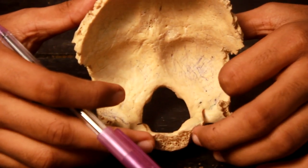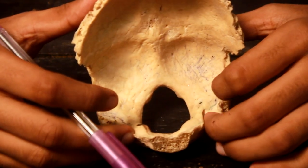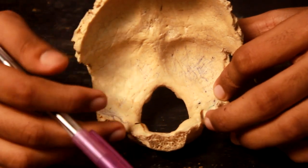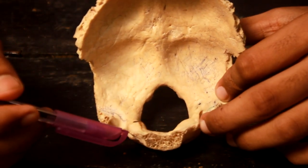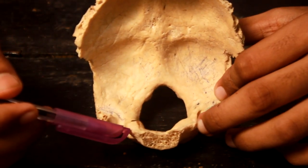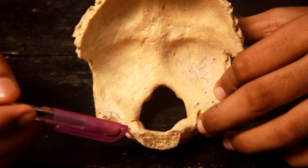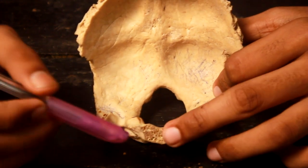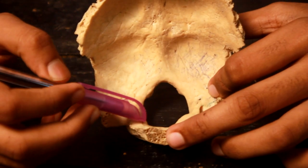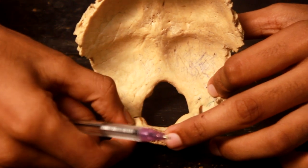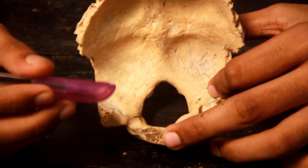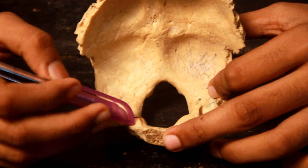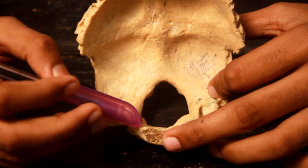Each of the lateral borders of the basilar part articulates with the medial part of the posterior border of the petrous part of the temporal bone by sutural ligament. There is a fine groove which gives lodgement to the inferior petrosal sinus, which is the first tributary of the internal jugular vein.